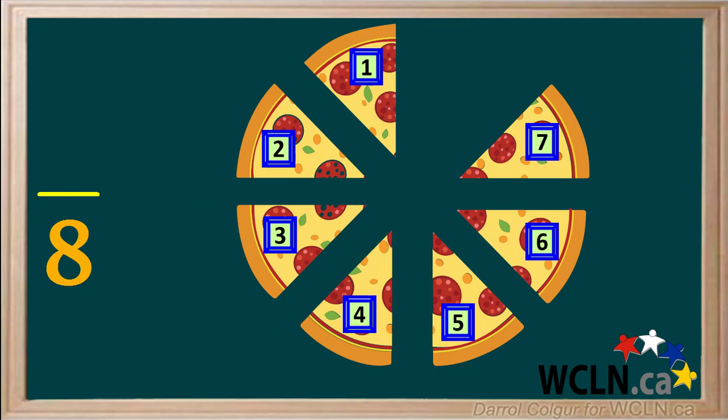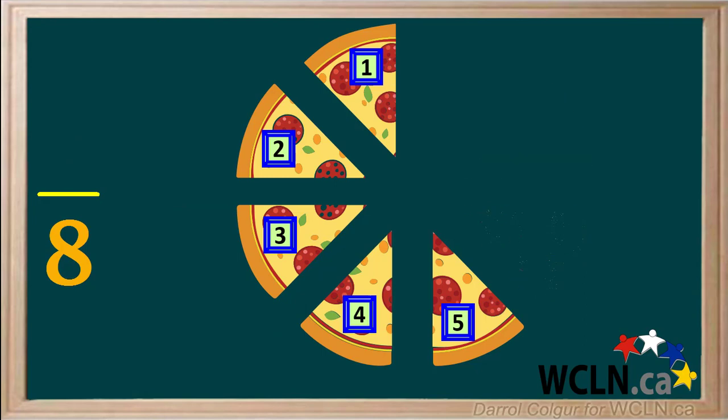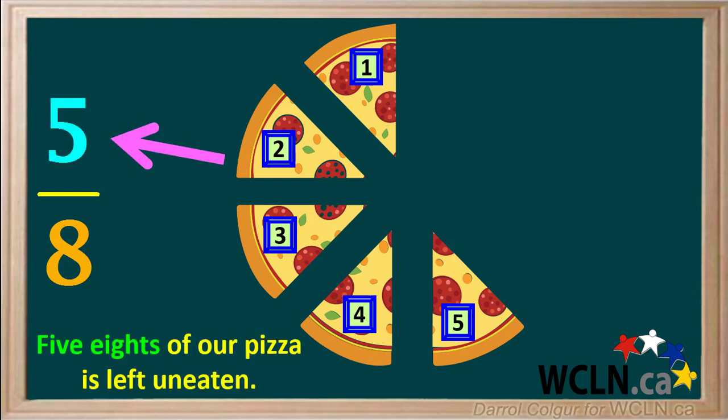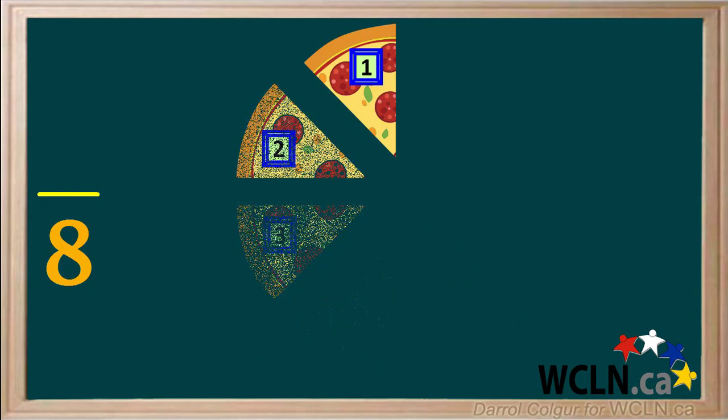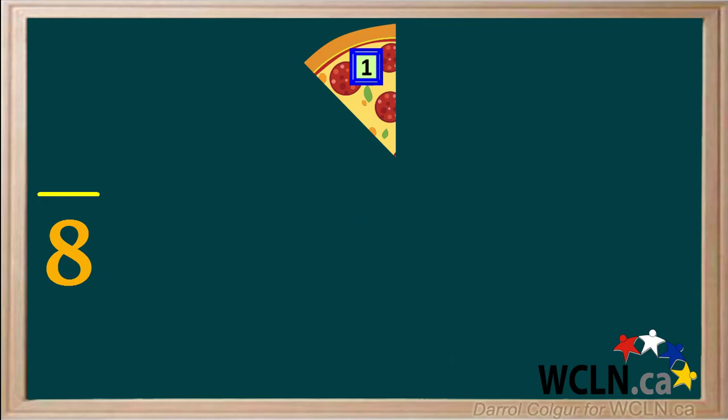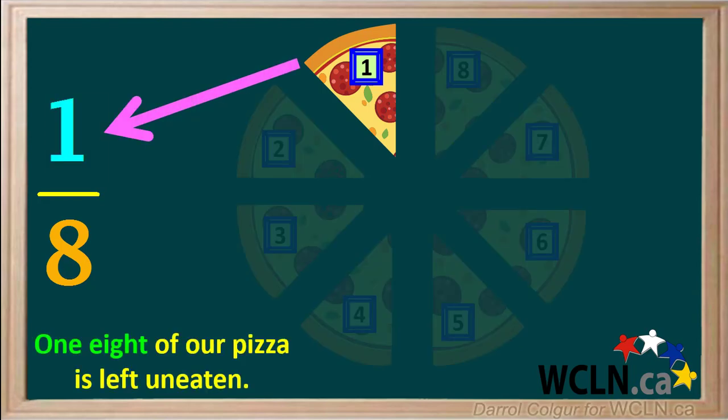Now someone eats two more pieces. So we can say that we now have five eighths of our pizza left uneaten. While we were talking about fractions, someone ate four more of the pieces. So now we have only one eighth of our pizza left uneaten.